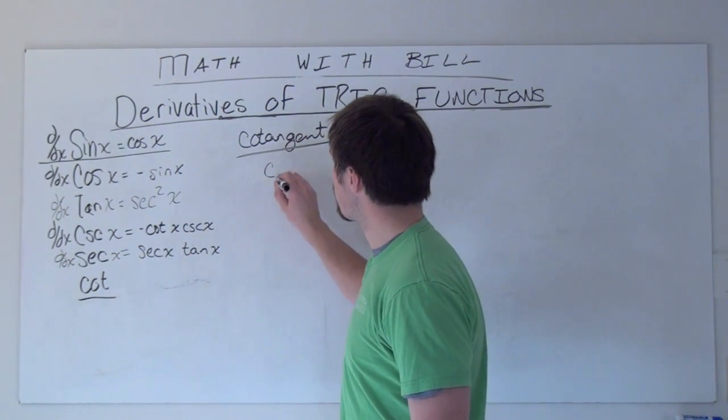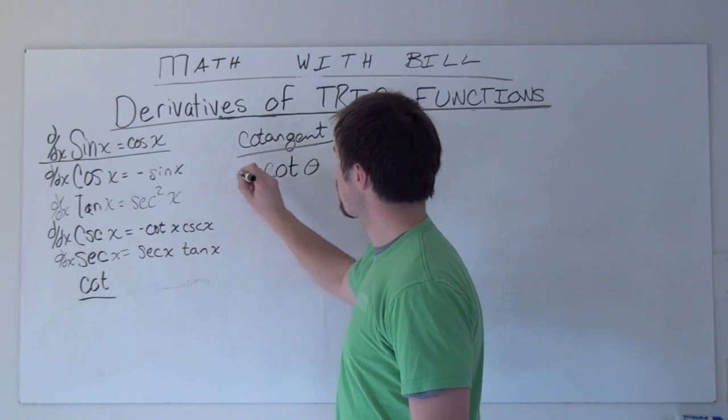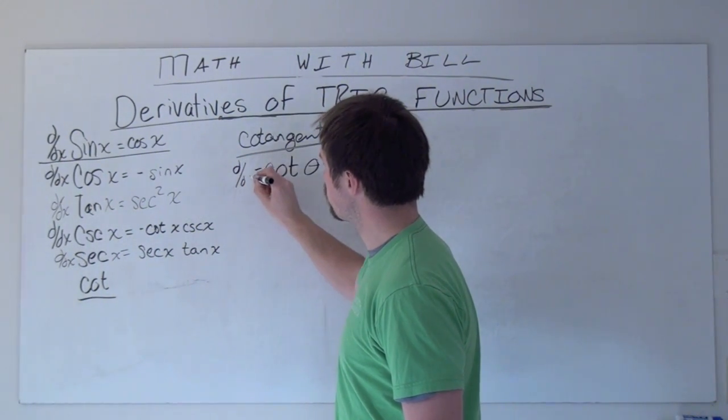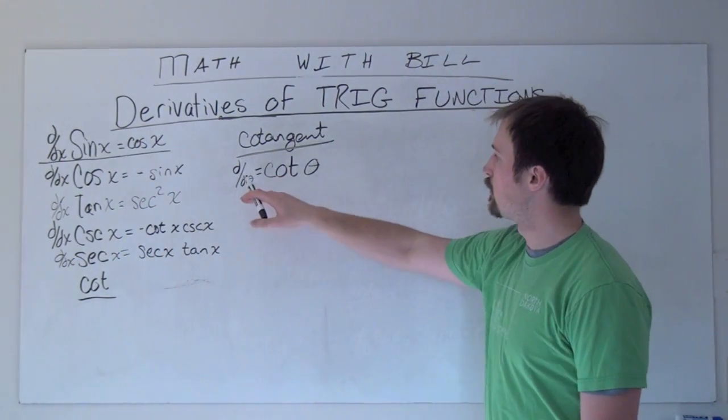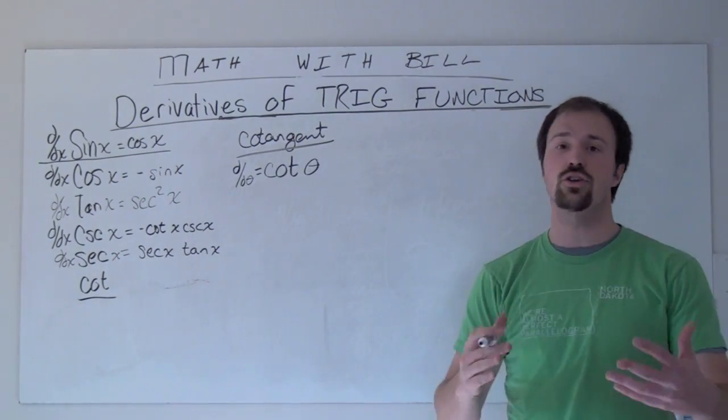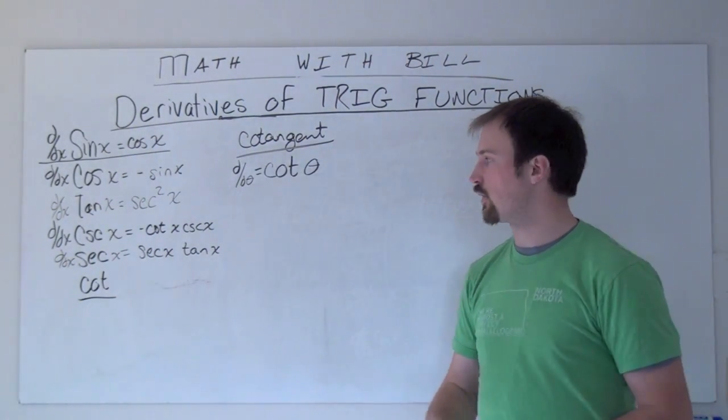So cotangent we abbreviate with C-O-T, and if we're looking to take the derivative with respect to theta, or respect to x, or really whatever, of cotangent theta, we're going to use previous knowledge. We're going to use everything that we have already known.